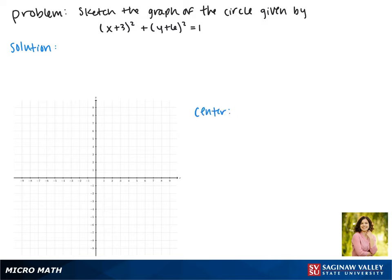Let's remember that the standard form of our equation of a circle is (x-h)² + (y-k)² = r², where the center is the point (h,k).